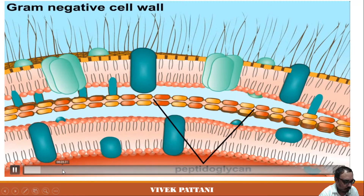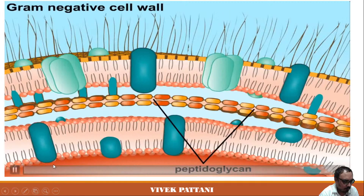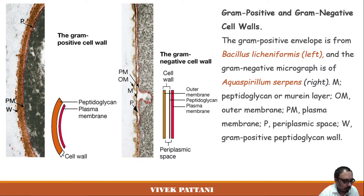Most bacterial cell walls are essential for the integrity of the cell, making them an excellent target for antibiotics. Both gram positive and gram negative bacteria have cell walls, but gram positive cell walls contain more peptidoglycan content compared to gram negative cell walls, so there is a difference in the composition of both.